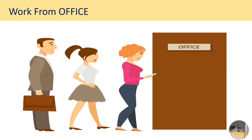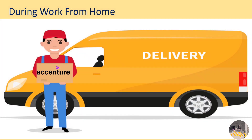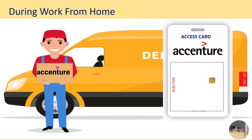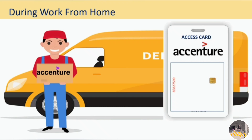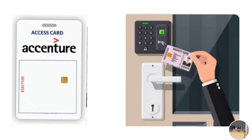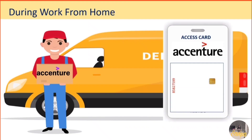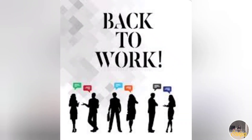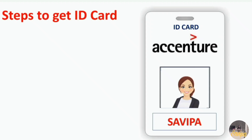The major difference between work from home and work from office is: when your assets like a laptop are delivered, you will also receive an access card along with your assets — it may be a separate delivery or the same one. Many new joiners have confirmed they received an access card during asset delivery. Note that access card and ID card are different — the access card is only for swiping to enter and leave the office, it has a chip inside and no personal details. The ID card is different.